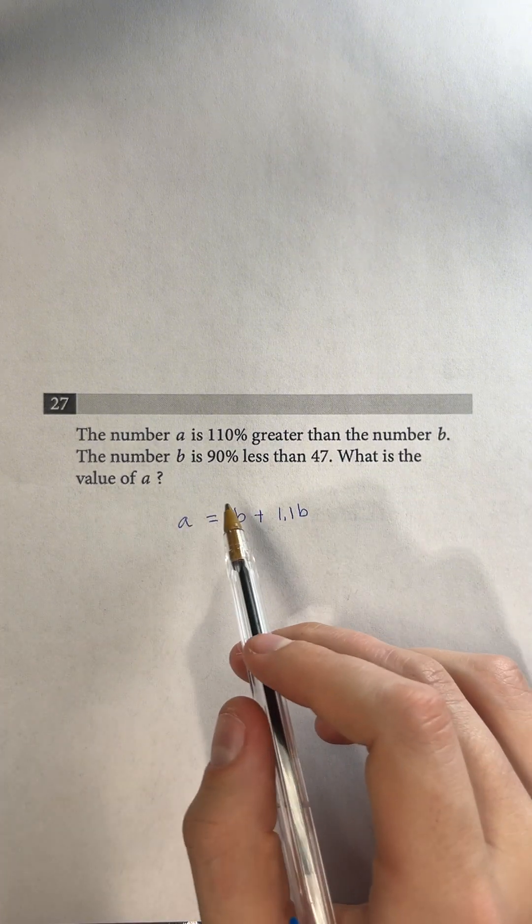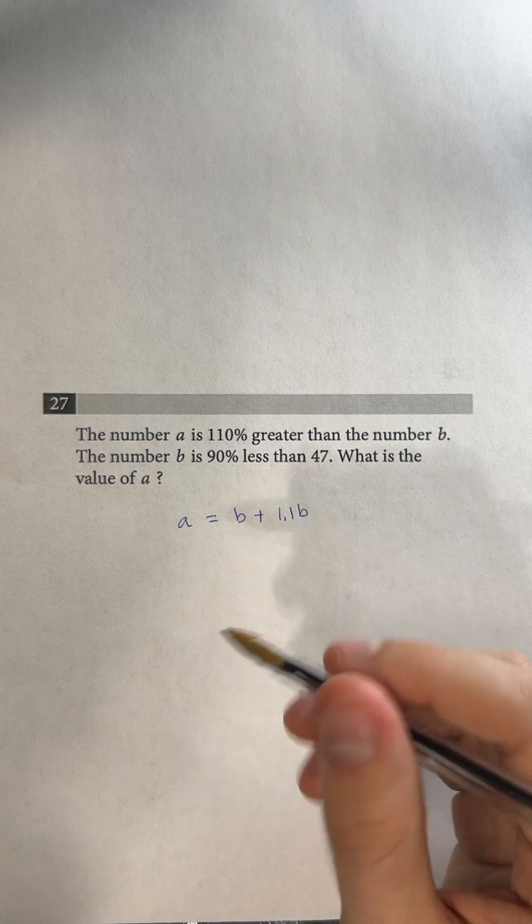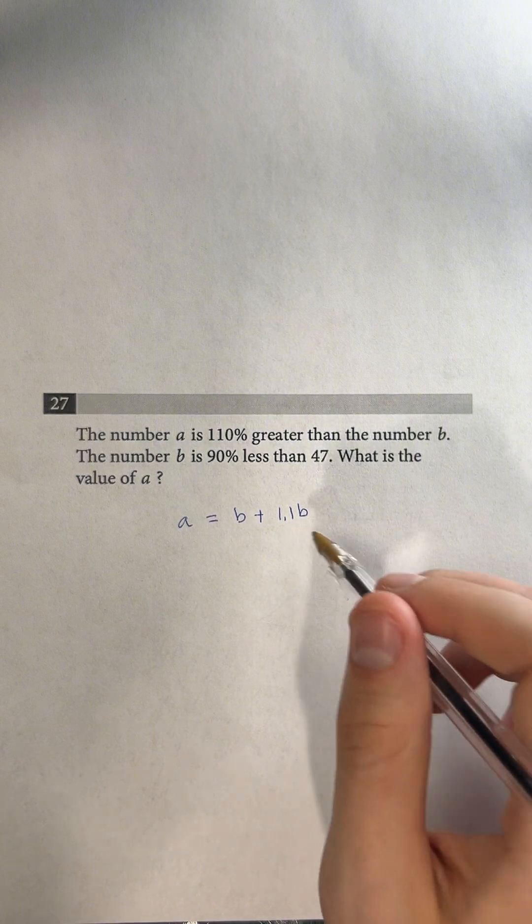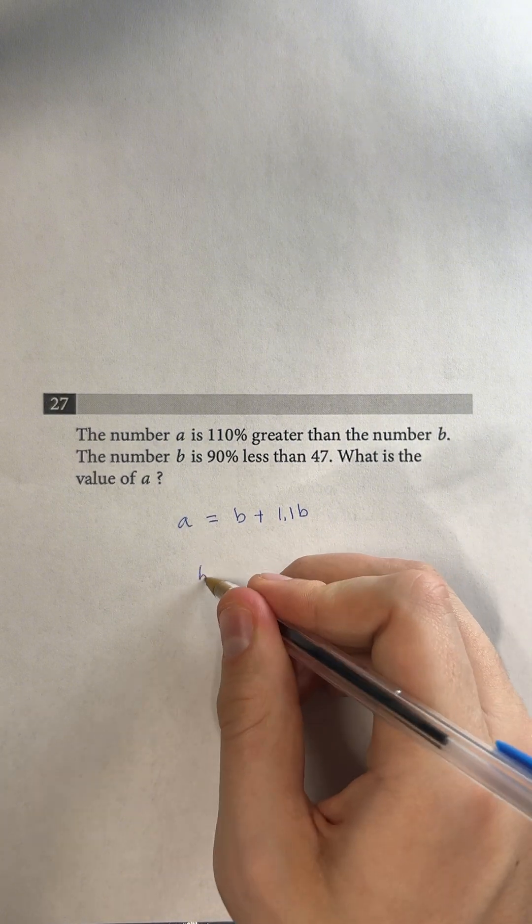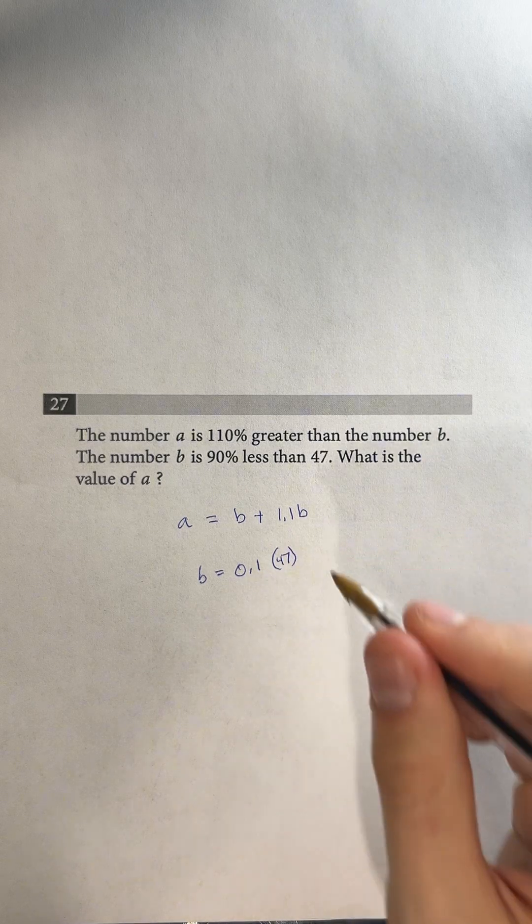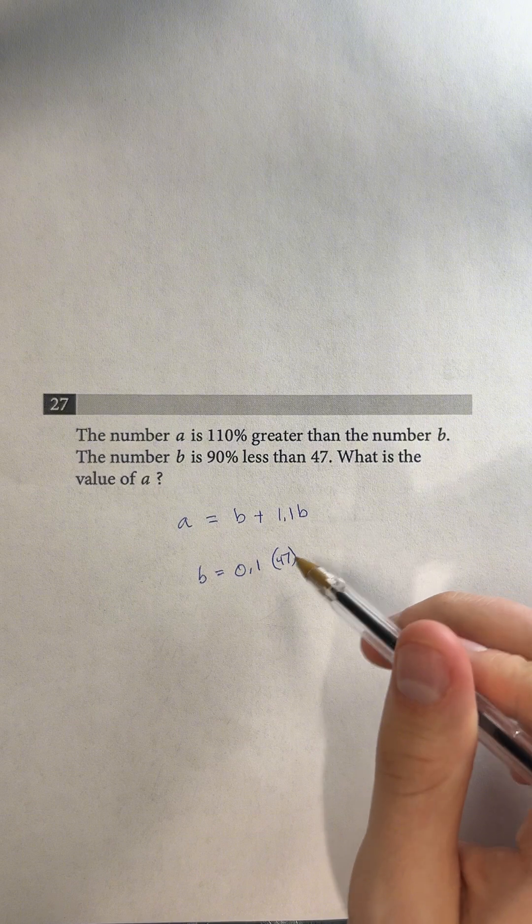And then it says the number B is 90% less than 47. What is the value of A? Okay, so we know that B is 90% less than 47. So that means that B is going to equal 0.1 times 47. And that's because 90% less just means that it's 10% of 47.